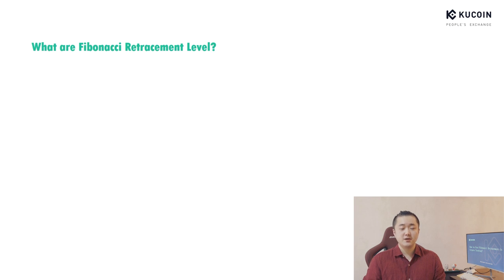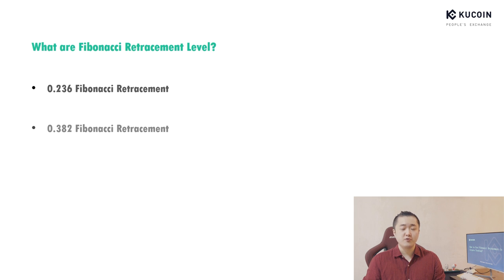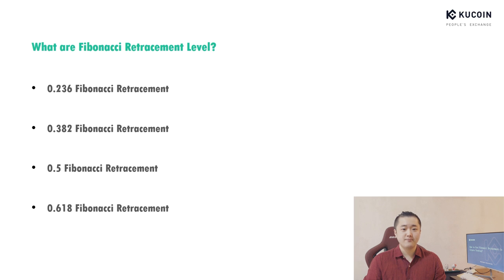In terms of technical analysis, people commonly define 4 different retracement levels as Fibonacci Retracement levels. The first retracement level is 0.236, which means that the trend is pushed by high trading volume and this is a strong signal to follow the trend. The second retracement level is 0.382, which is less important and suggests the market will move on to the 0.5 retracement level. The third retracement level is 0.5, which is introduced by the Dow theory and is commonly used as the entry price. The fourth retracement level is 0.618, which is the boundary retracement level — if the retracement is larger than 61.8%, it is highly possible to change direction. Therefore, the retracement level between 0.382 and 0.618 is normal for market trend.